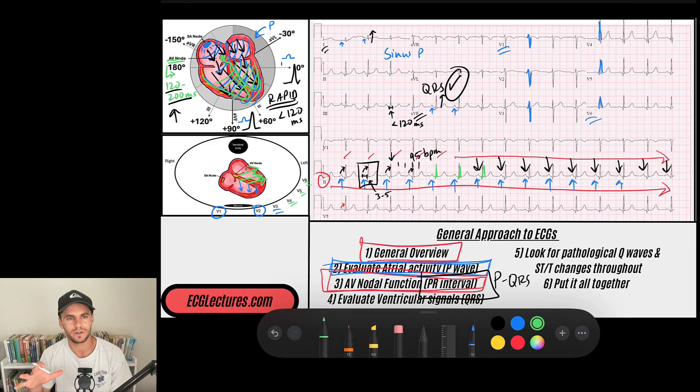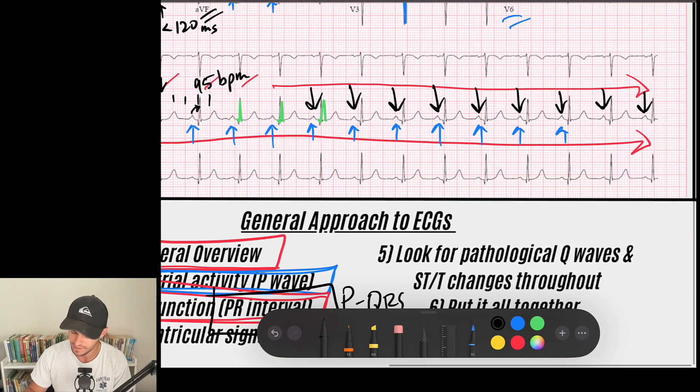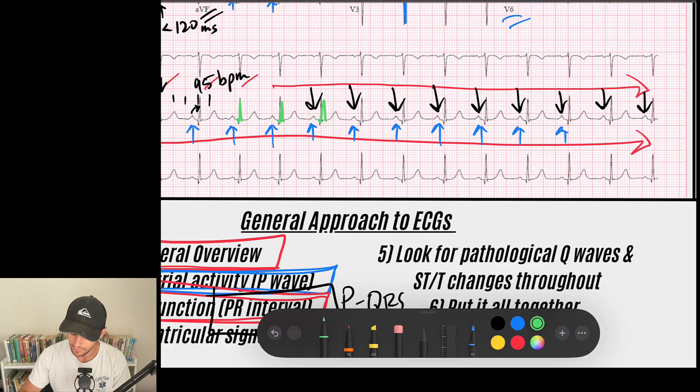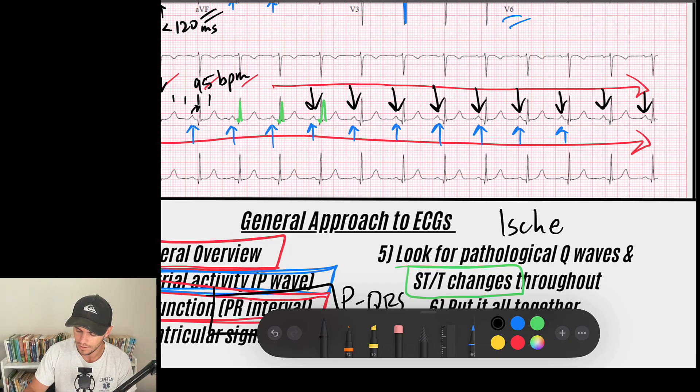Now we're done with our atrial depolarization, AV nodal conduction, ventricular depolarization. The next thing is ventricular repolarization. Remember, repolarization is essentially getting those cardiac cells back to their state where they can depolarize again. And so the way you look at that is you look at the ST segment. So if I zoom in at step number five, you're going to see, look for ST or T wave changes. So we're going to evaluate repolarization as well as we're going to also kind of call this our ischemia phase.